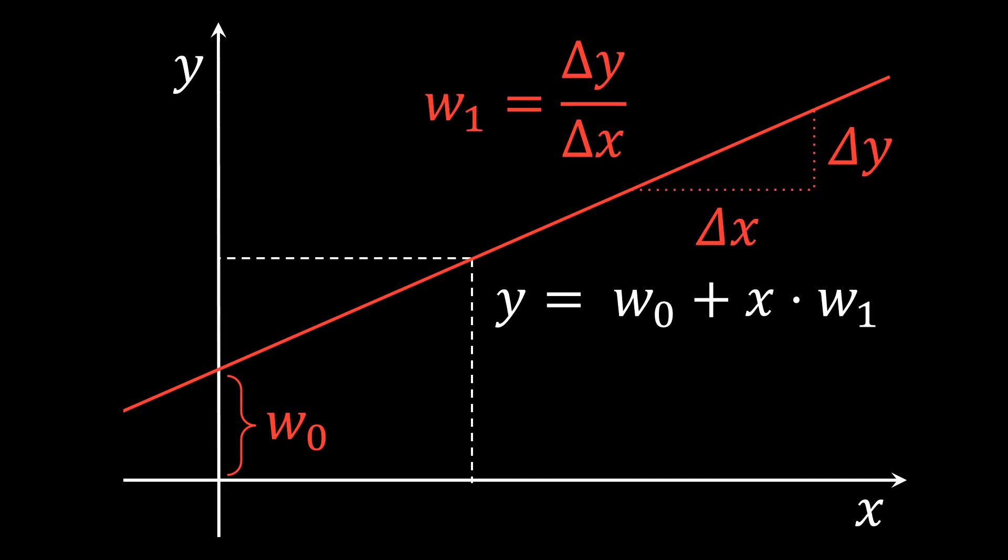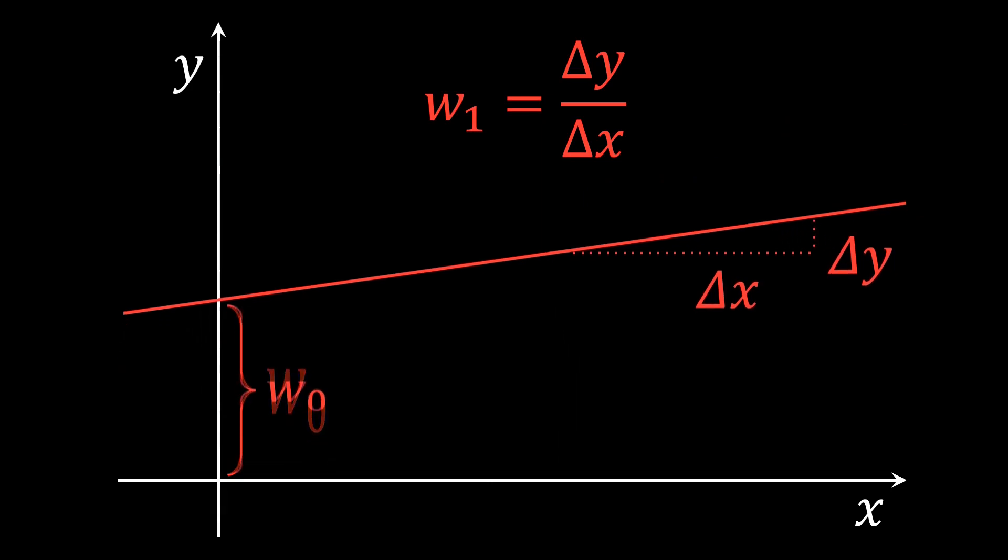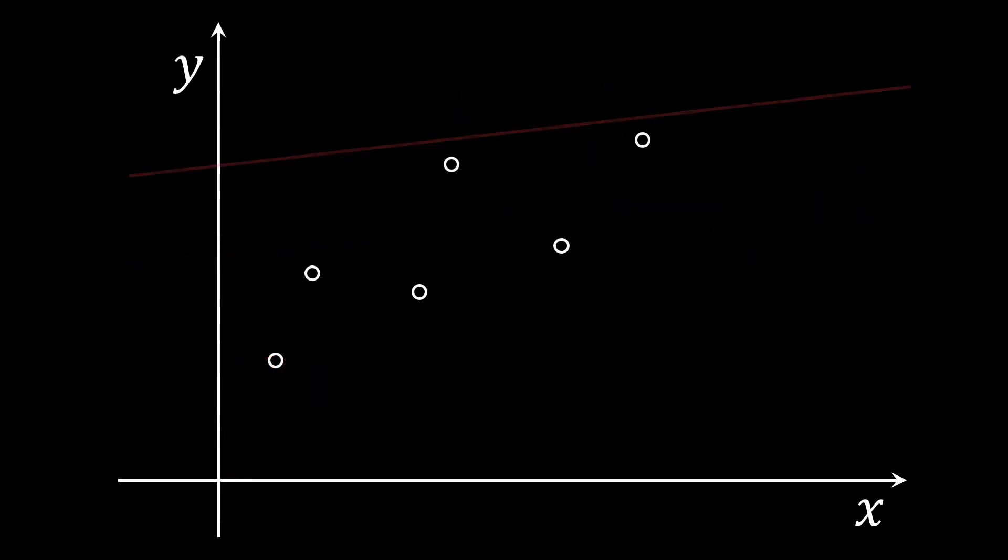Different weights therefore define where the line is placed. Now, since there are an infinite number of possible weights, we ask the question differently. Given some example data points, can we find the line that best represents the data? Note that we do not assume that the data lines up perfectly. Instead, we are merely interested in the line that best fits the data.